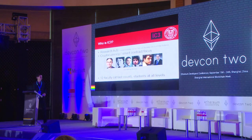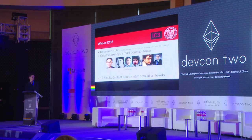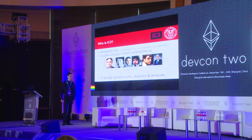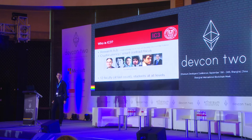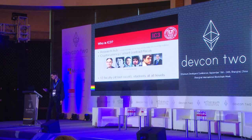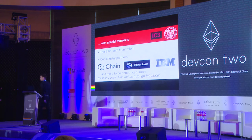Let's start out with who is IC3. IC3 is a research hub centered around the universities you see there — mostly Cornell University, also UIUC, Berkeley, Cornell Tech, and the Technion. We've got 12 faculty at last count and we're adding more all the time. In the last month we've added at least two or three faculty, and we've got many students at all levels of education.